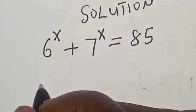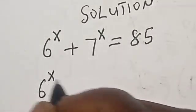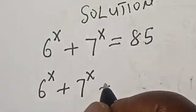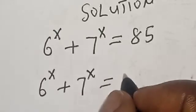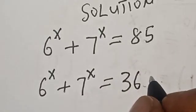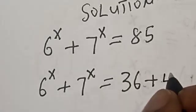Now 6 raised to power x plus 7 raised to power x is equal to 85, which is 36 plus 49.